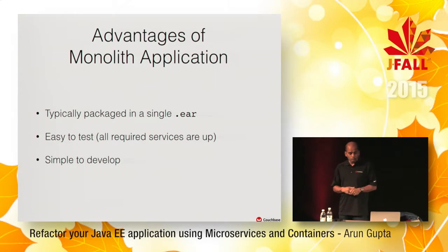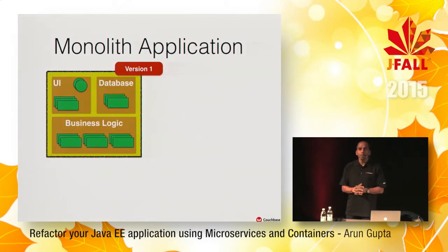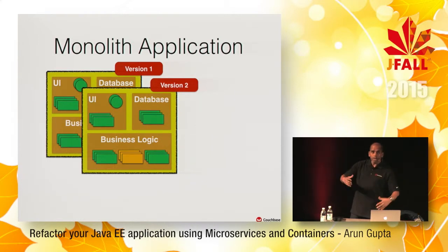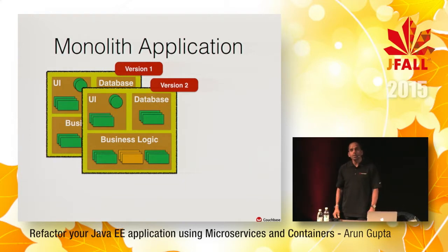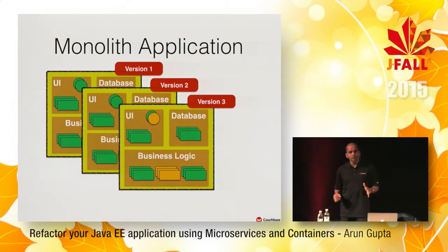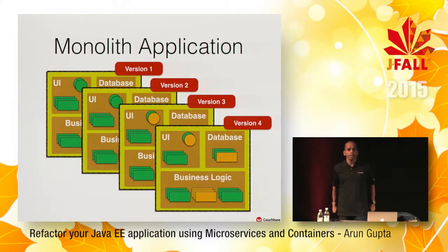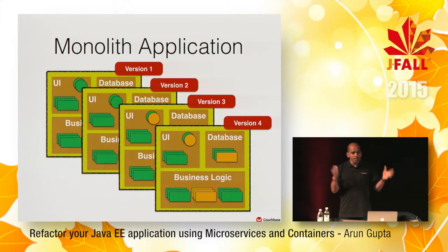How do these applications scale? We have version one in a monolithic application. A certain component changes — it's a single archive, that's the definition of monolithic. One component changed, but you have to package the whole thing again and deploy it. Then another component changes — you package up the entire application and deploy it all over again. God forbid you're using a heavyweight application server like WebLogic or WebSphere — it's going to take a while to deploy.